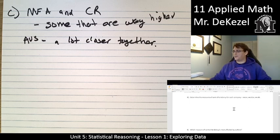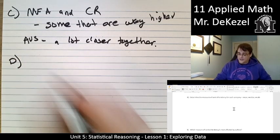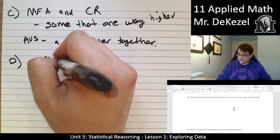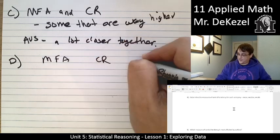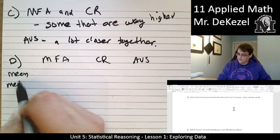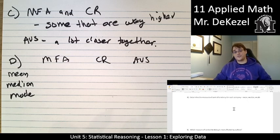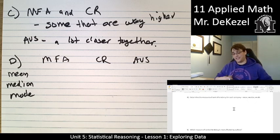We continue on. Question D. We determine the measures of central tendency for each company. So this is what I encourage you to do. You may have already done it. Congratulations. It seems that I have it listed here. Let's make a little chart. Super fun. MFA, CR, and AVS. So these are the companies. And we have the mean, the median, and the mode here. I would encourage you to maybe pause and just see if you can do it on your own before I lay these out.